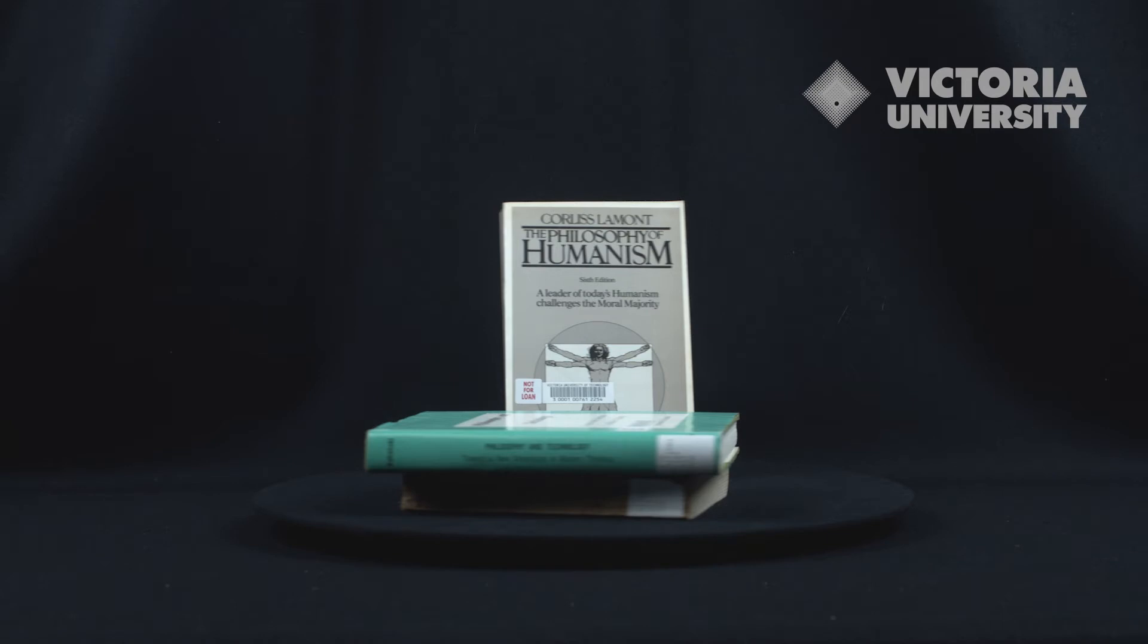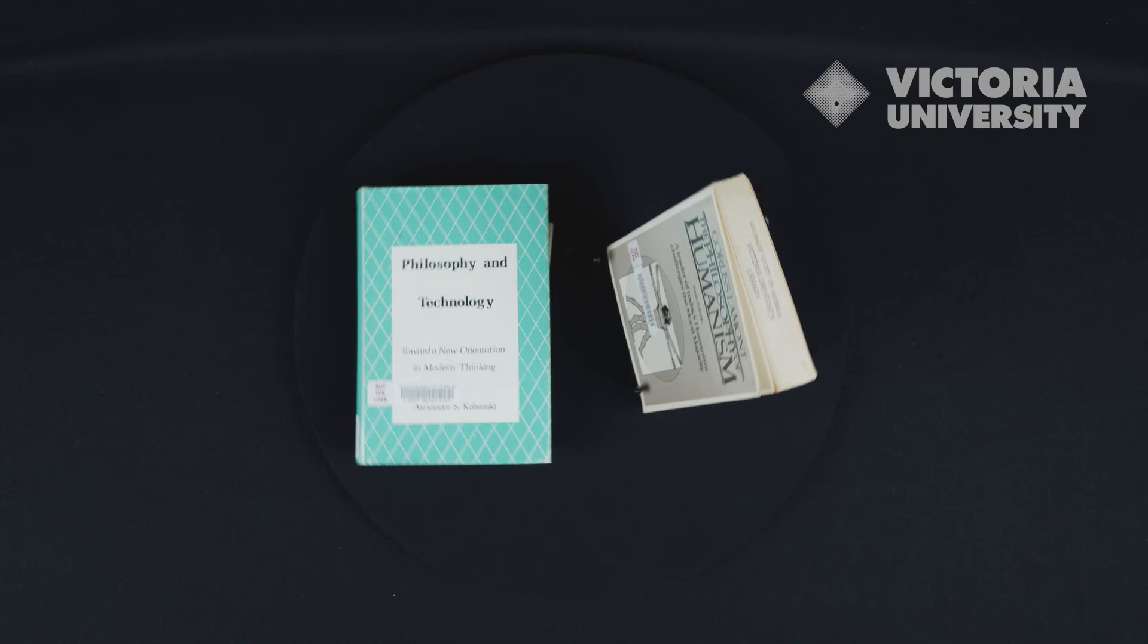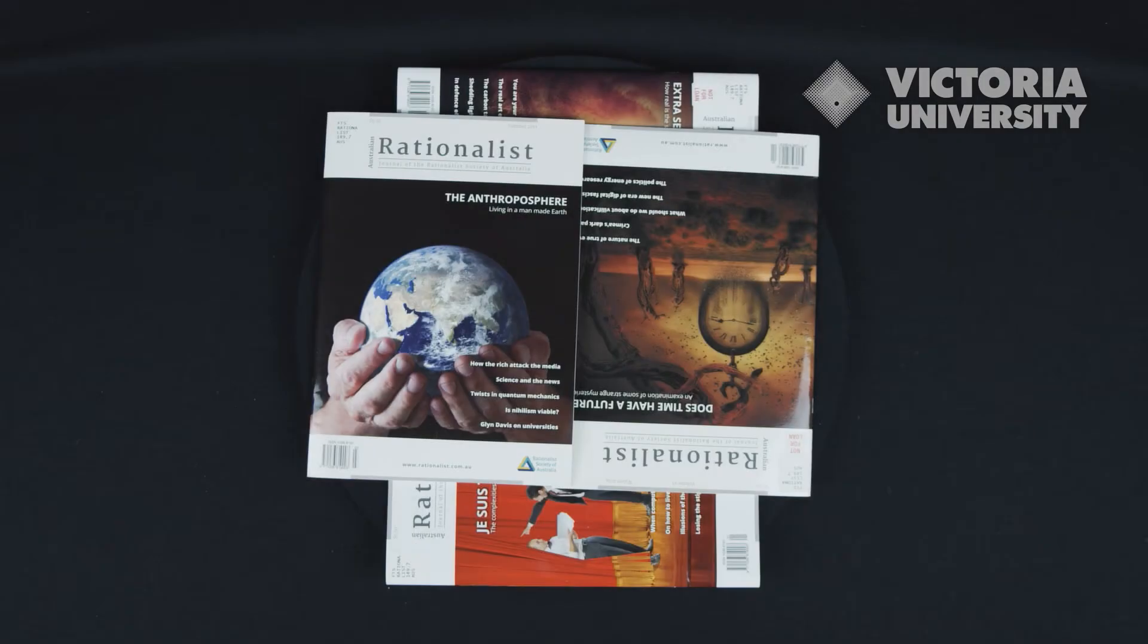The Rationalist Library was founded in 1909 by the first Secretary of the Victorian Rationalist Association, Edward Martino Higginson, to support its campaigns and promote public debate.